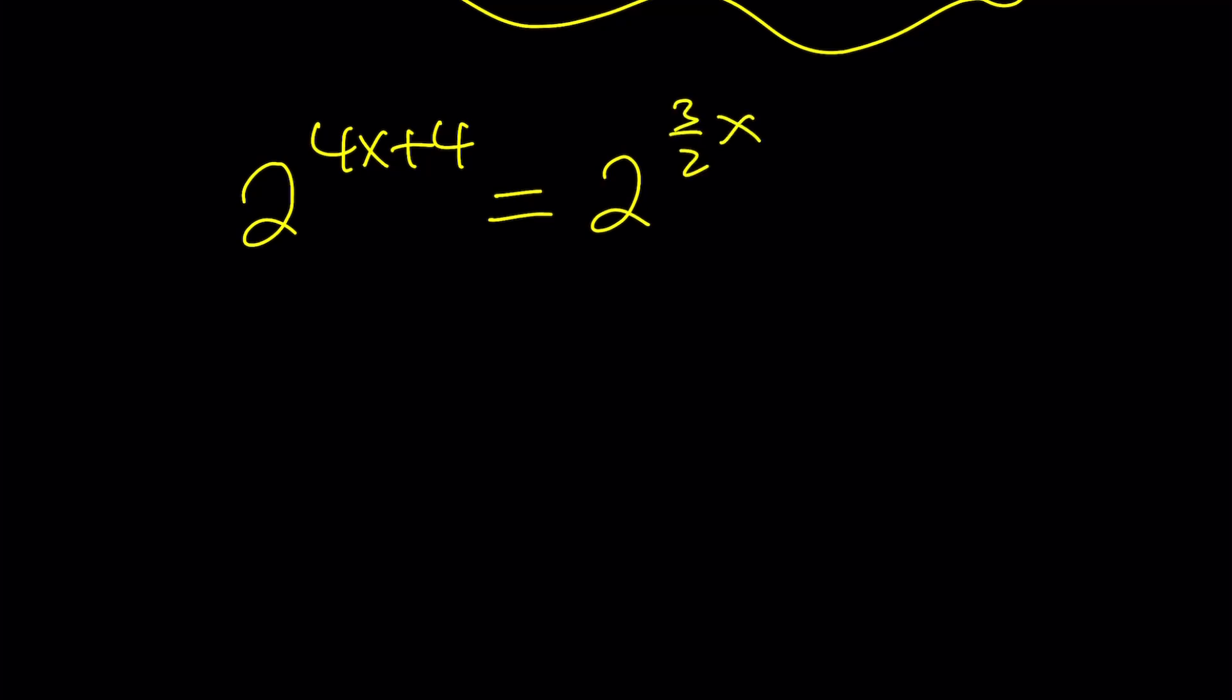Now, to find some complex solutions, I'd like to get 1 on one side. How can I do that? By way of division. Let's divide both sides by 2 to the power 3 halves of x. This is going to give us 1.